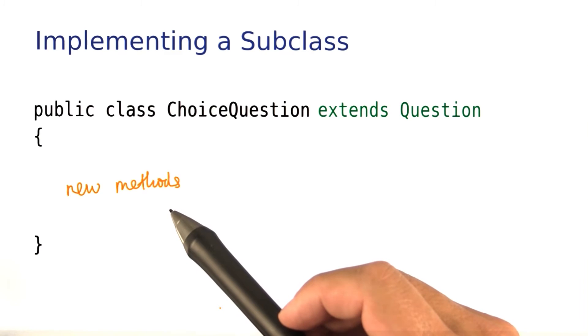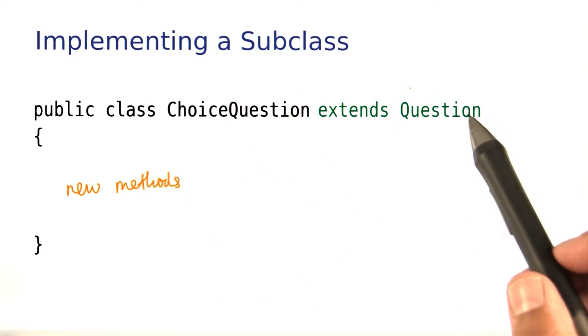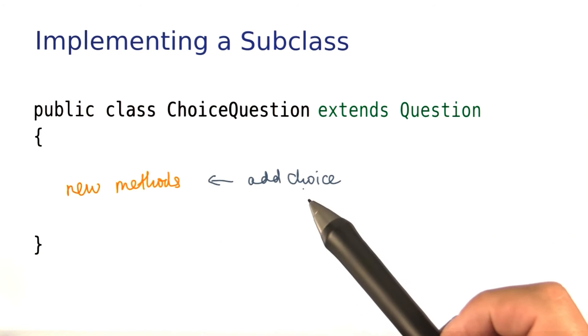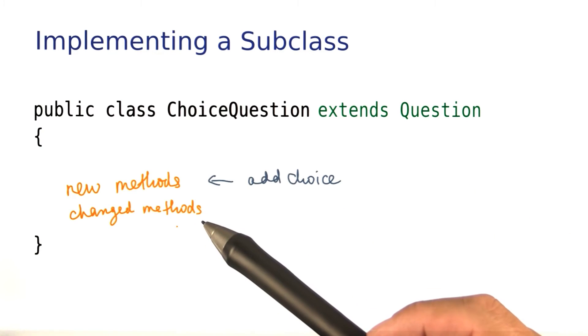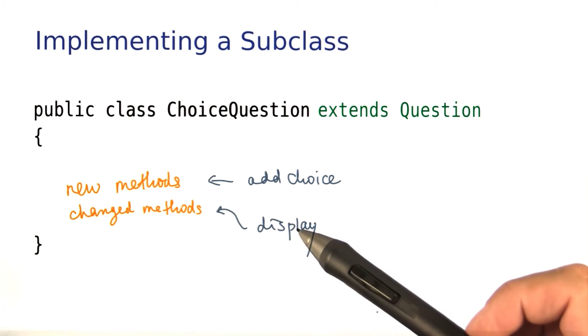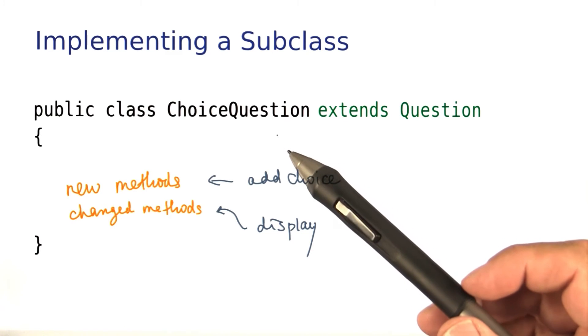Into the body of the subclass, I put in any new methods that are present in the subclass but not the superclass, such as the addChoice method. You also put in the implementations of any methods that needed to change in the subclass. For example, we'll need to change the display method, since displaying a choice question must also display the choices.